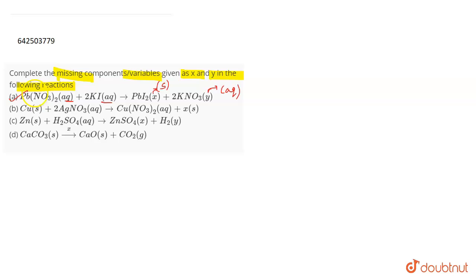Talking about the second one which is the B part, it is Cu solid plus AgNO3 aqueous giving Cu(NO3)2 plus X solid. Now this is a displacement reaction and you will get 2Ag solid in this case because copper being more reactive than silver is displacing silver from its nitrate solution and forming a copper nitrate solution and giving out silver. So AgS will be X.